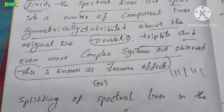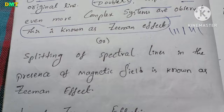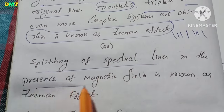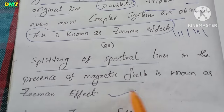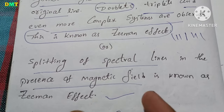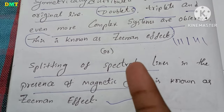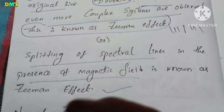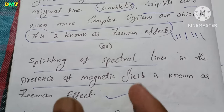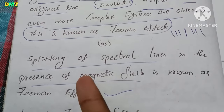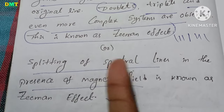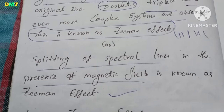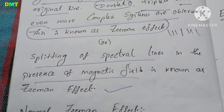Let's put this more simply: the splitting of spectral lines in the presence of a magnetic field is known as the Zeeman Effect. The magnetic field causes splitting — that is the main thing.